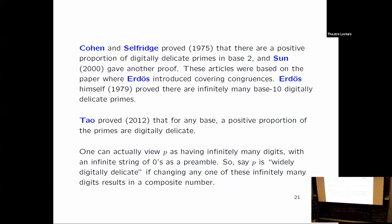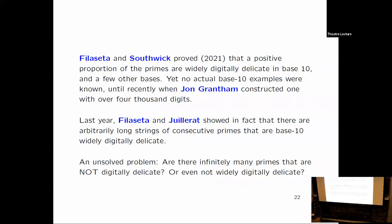Tao proved that in any base, a positive proportion of the primes are digitally delicate. Now what is widely digitally delicate? That means that you can think of a number as having infinitely many digits, because before the number there's an infinite string of zeros. And if you changed any one of those zeros to some other digit, it would become composite. Tao and his colleagues proved that, in fact, a positive proportion of primes are widely digitally delicate in base 10. Yet he didn't have a single example. He just proved that there was a positive proportion.